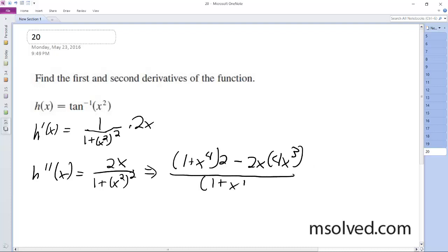1 plus x to the fourth squared. And then finally we get 2 minus 6x to the fourth over 1 plus x to the fourth squared. That's it.